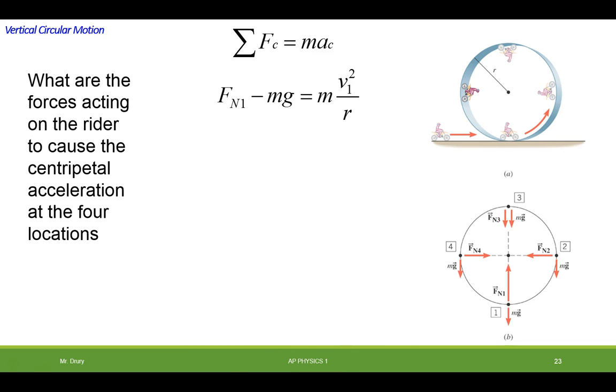So let's look at the first location. If we count towards the center of the circle as being positive in all cases, then we have normal force at one pushing up and the weight acting down is equal to mass times velocity squared over r. In other words, the sum of the forces are equal to mass times acceleration.